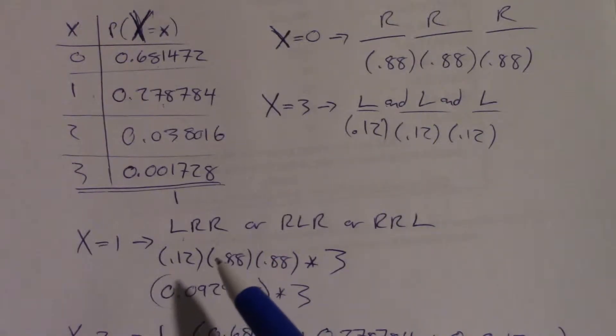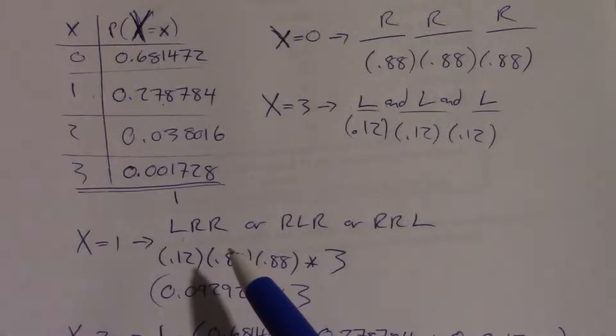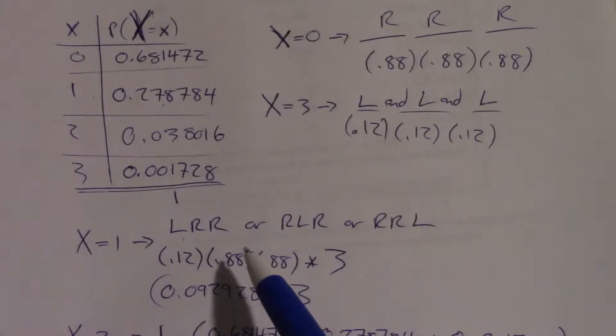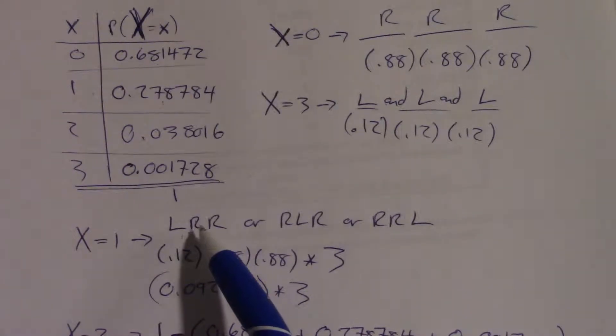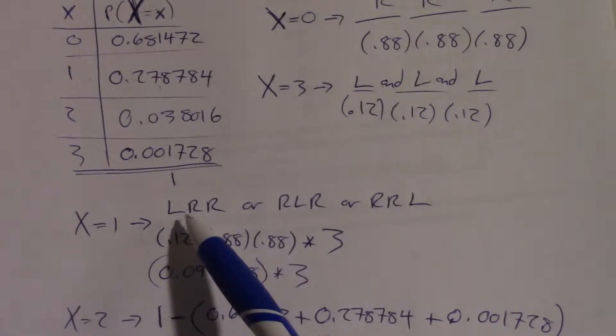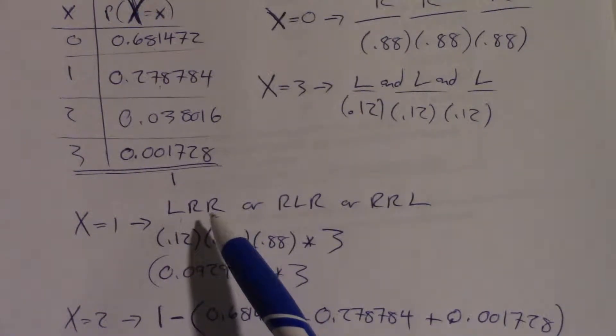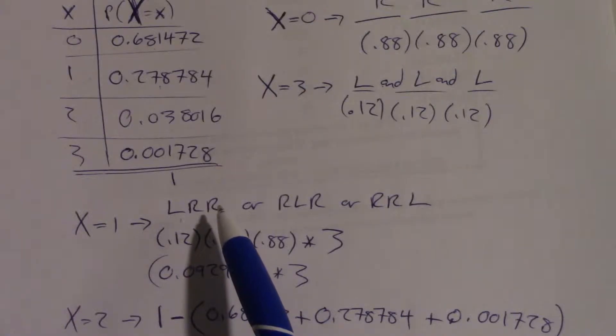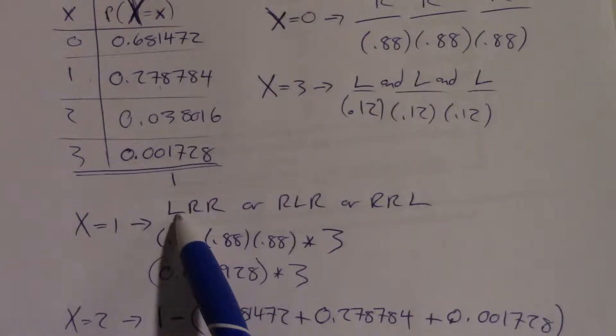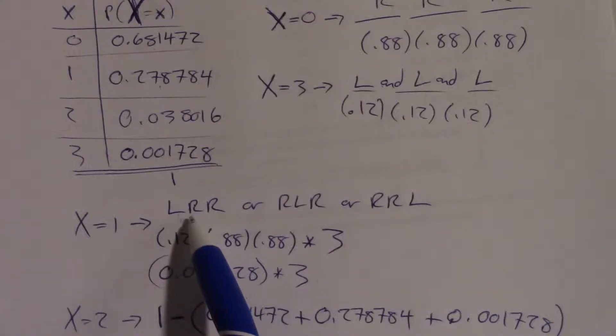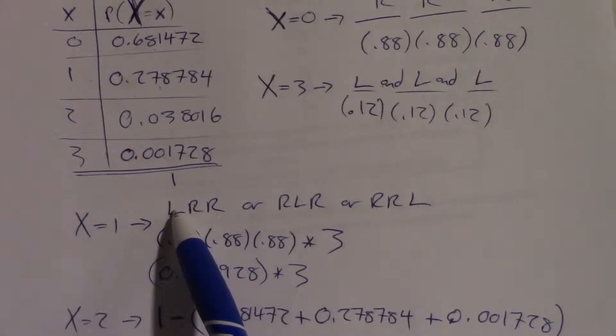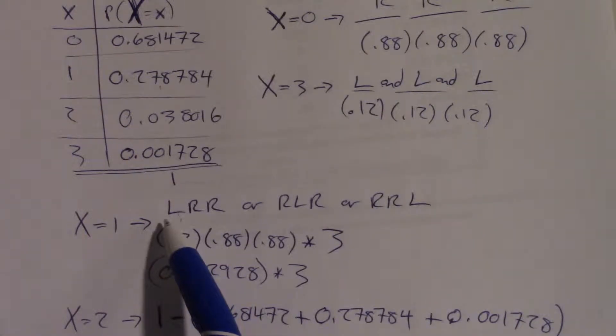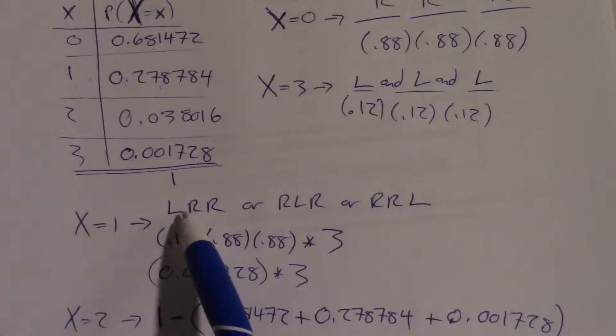But in these previous two examples, we haven't had to worry about the conditional probabilities. Because really to find, say, this probability, left, right, right, what we're saying is we want the probability of left and right and right. So that's a longer version of the multiplication rule. So it would say, what's the probability that you get a left handed person times what's the probability you get a right handed person given first was left, but since our people are assumed to be independent, we don't care. It goes away.